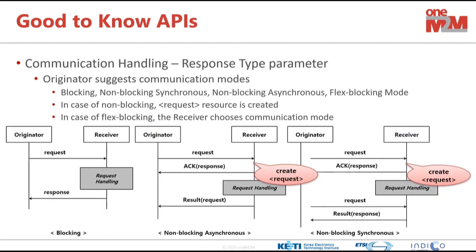For communication methods, indicated by the response type parameter in the request message: the response can come in blocking mode — right away after the request. Or there can be an acknowledgement first, and then an asynchronous result from the receiver to the originator. That is non-blocking asynchronous communication.